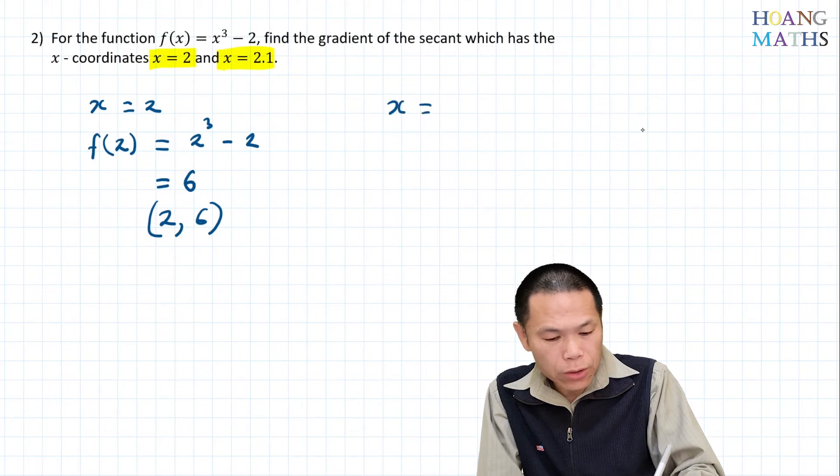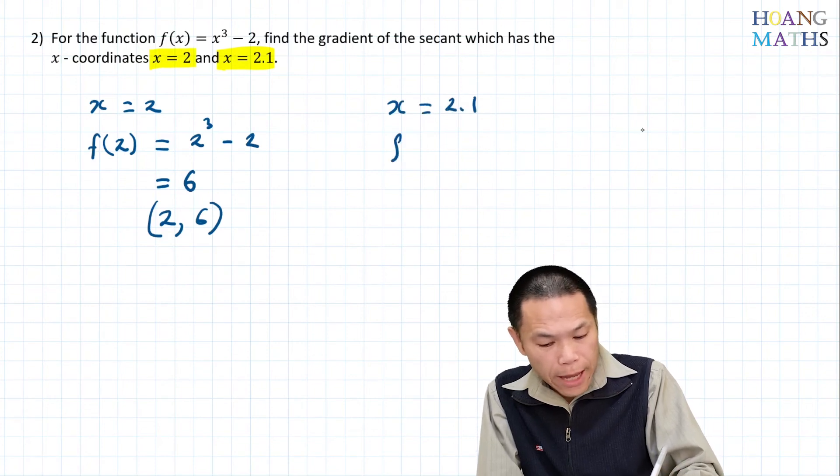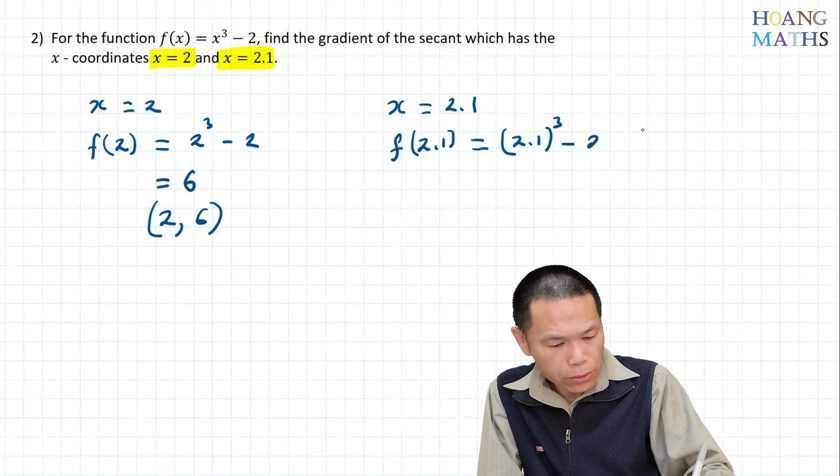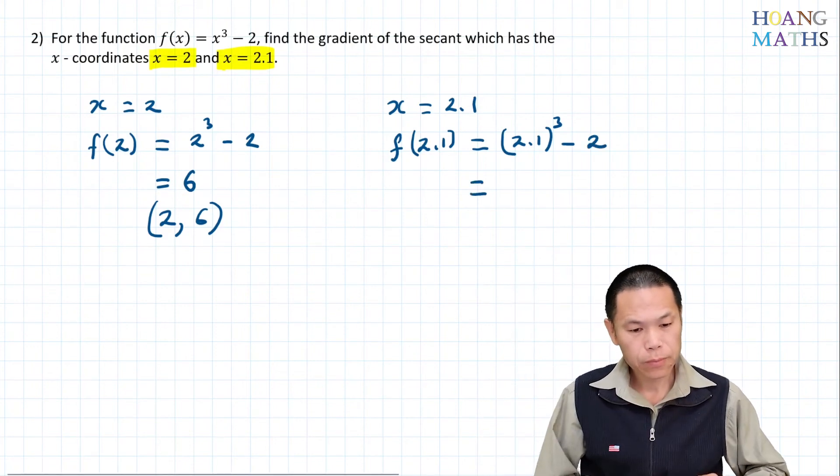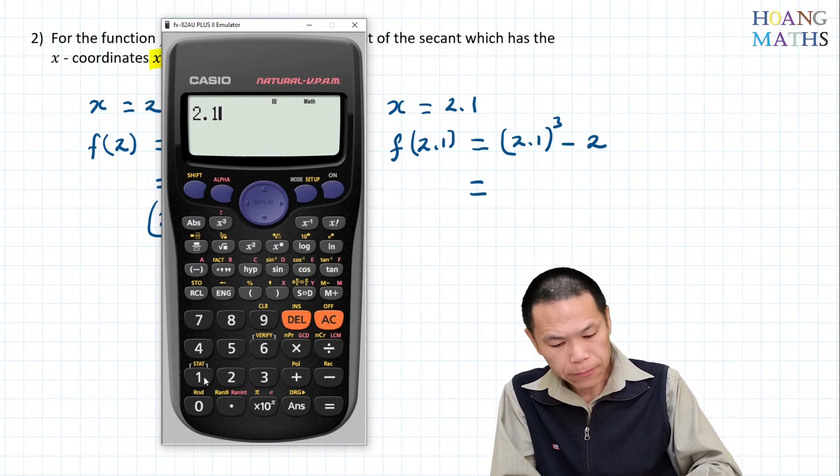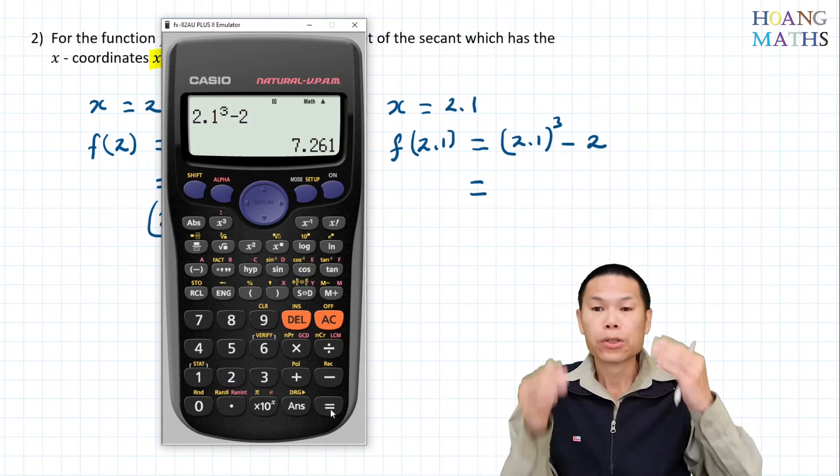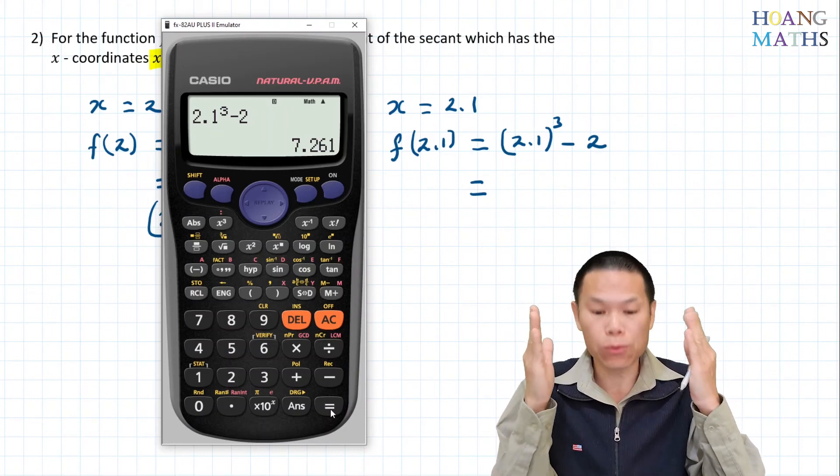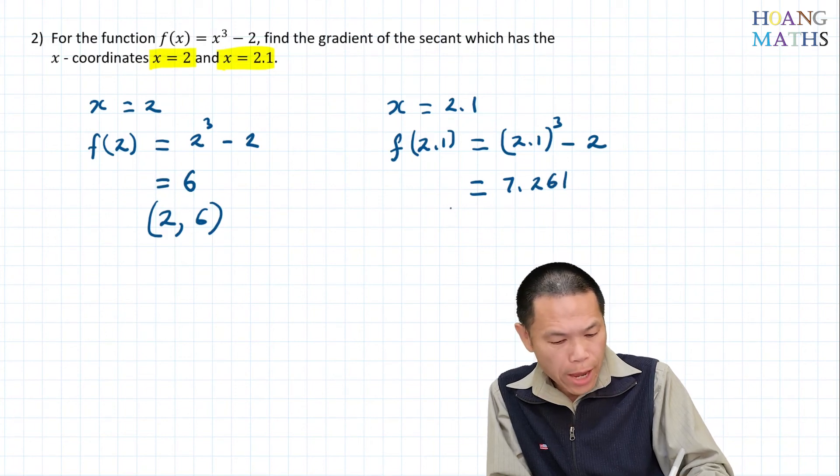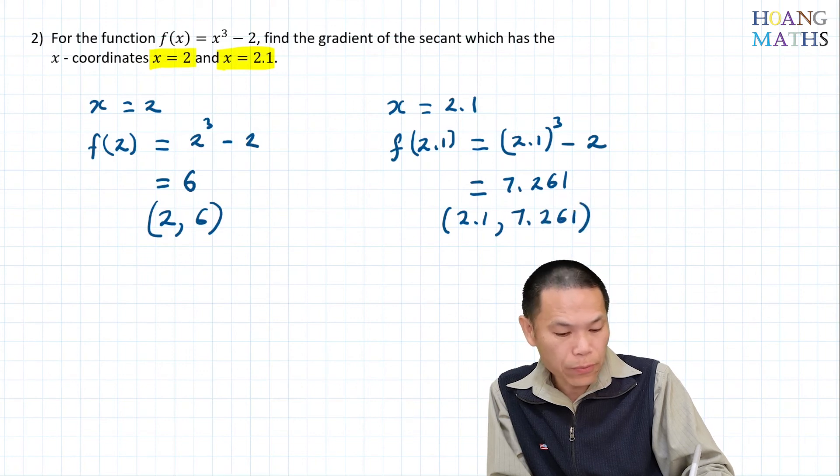For x = 2.1, f(2.1) = 2.1³ - 2. Let me calculate: 2.1³ - 2 equals 7.261.